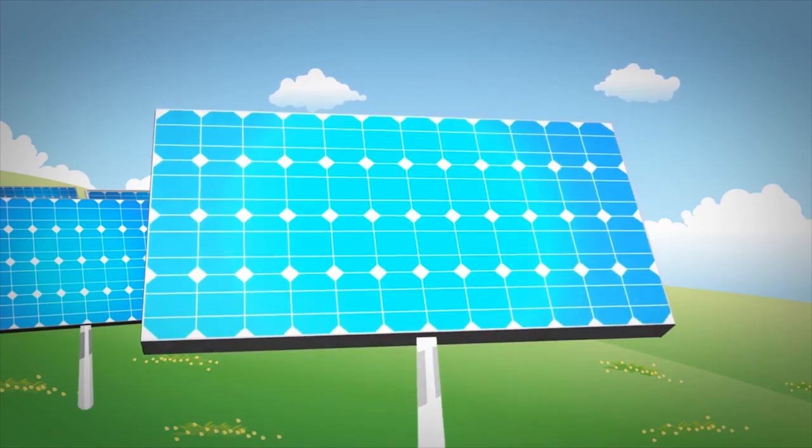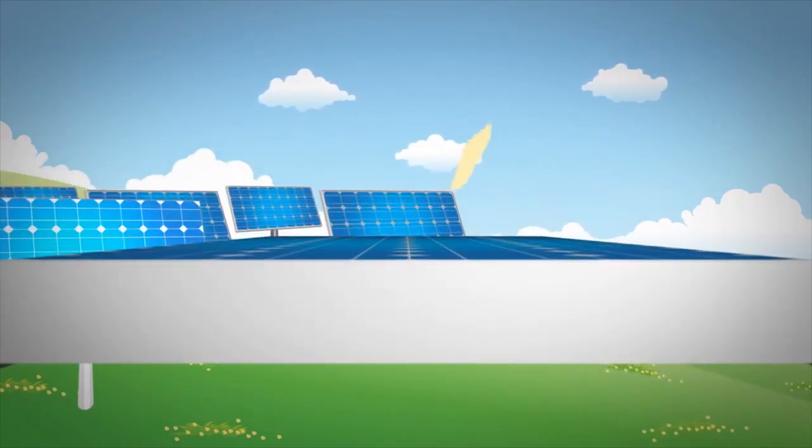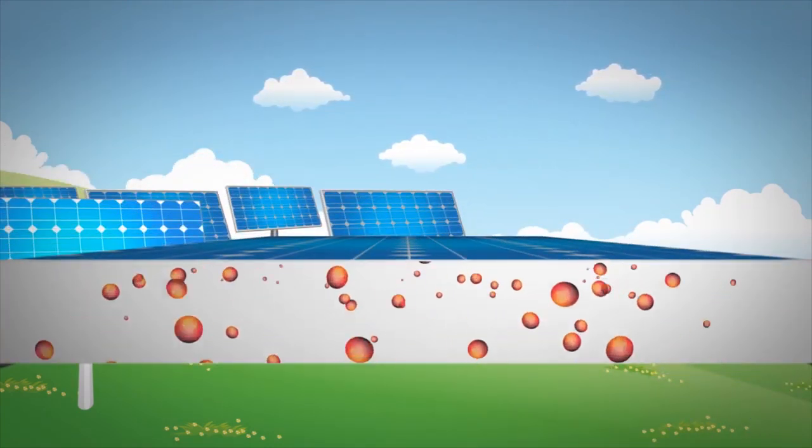Photovoltaic cells convert sunlight into electricity. When sunlight strikes a solar panel, it excites electrons trapped in silicon cells and energy is created.